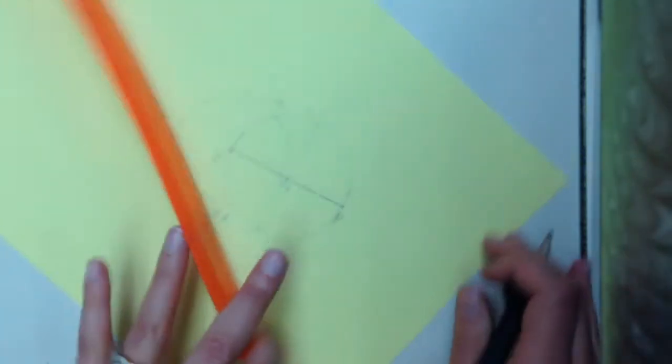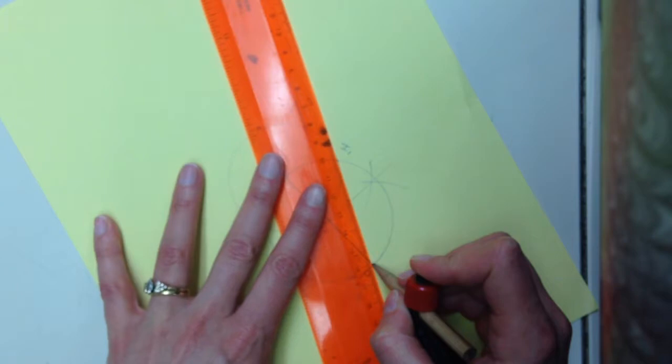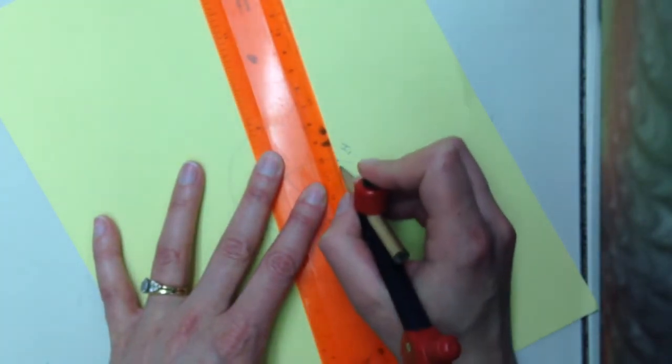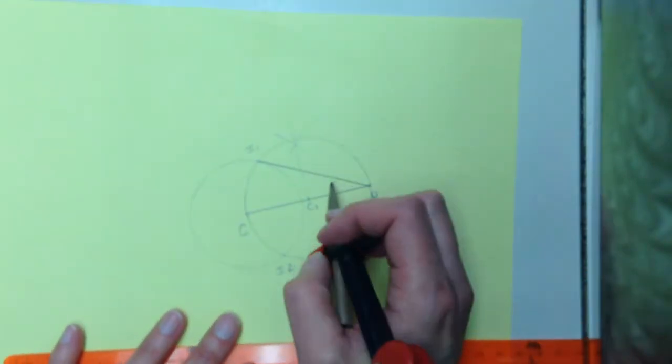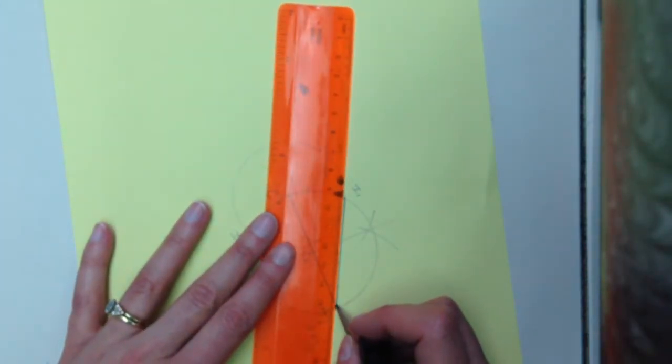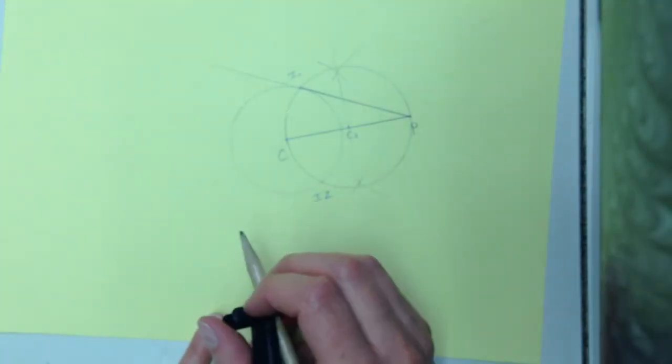So if I go back to point P, that was the original point we started with, and I now go to my first intersection point and connect them, that gives me a tangent line. Let me extend it. That gives me a tangent line from point P to circle C.